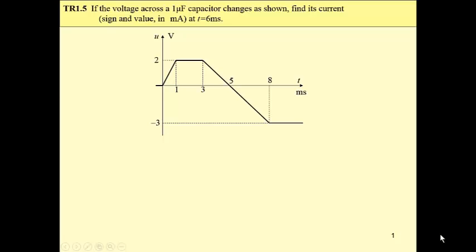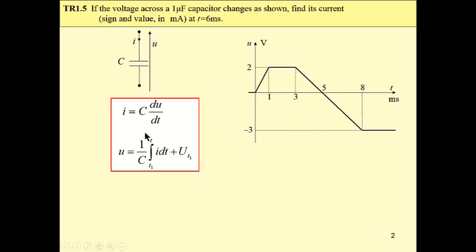For a one microfarad capacitor and its I-U relationships for the given waveform of voltage, how can we find the waveform of current first, and then for the waveform of current, how can we find the waveform of voltage? We have here the I-U relationships for a capacitor. Current is the differential of voltage multiplied by circuit constant C, and voltage is the integral of current divided by the same constant plus the initial condition at T sub one.